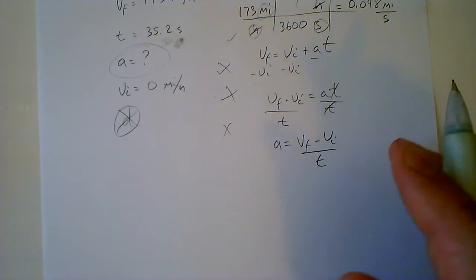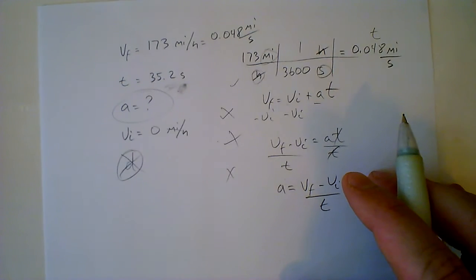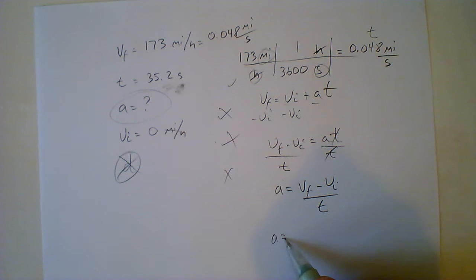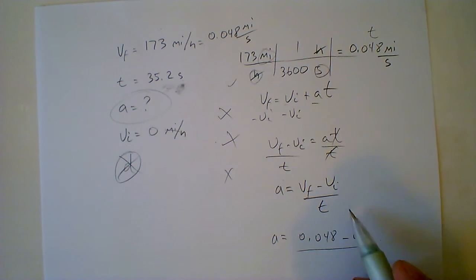And I'm ready to plug in my variables. So I have my variables over here. A equals VF. We're going to use the 0.048, not the 173. Minus initial velocity of zero over, and the time here is going to be 35.2 seconds. And we're ready to solve.